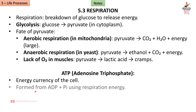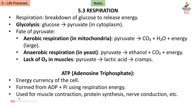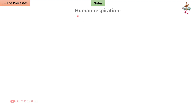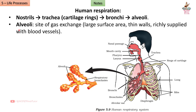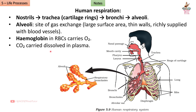ATP (adenosine triphosphate) is the energy currency of cells, formed from ADP + Pi using respiration energy. It is used for muscle contraction, protein synthesis, and nerve conduction. In human respiration, air passes from nostrils to trachea, supported by cartilage rings, then to the lungs and alveoli — the site of gas exchange. Alveoli have a large surface area, thin walls, and are richly supplied with blood vessels. Haemoglobin in RBCs carries O₂; CO₂ is carried dissolved in plasma.